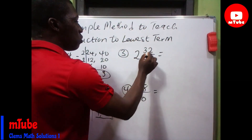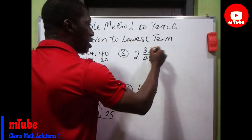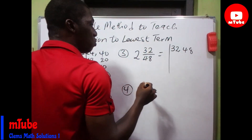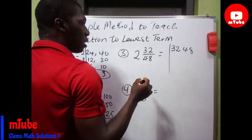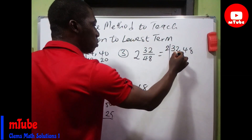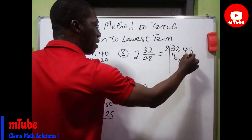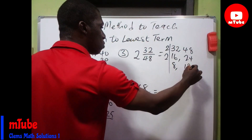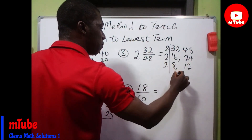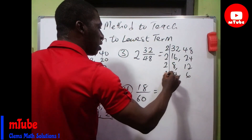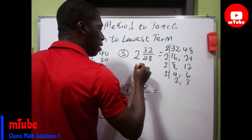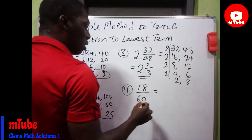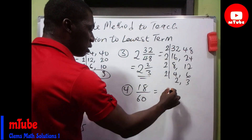Here you have 2 whole number 32 over 48. So you write out the numerator 32 and the denominator 48 and divide them with your common factors. Starting with 2: 2 divides 32 to give 16, and 48 to give 24. 2 again gives 8 and 12. 2 again gives 4 and 6. And finally 2 and 3. That means this is 2 whole number 2 over 3.